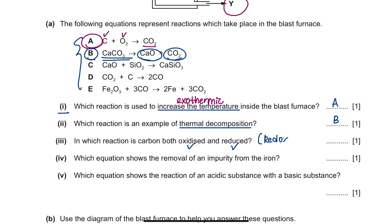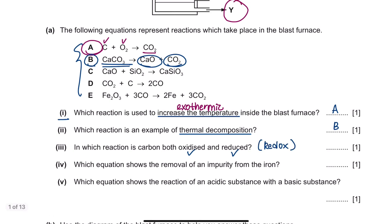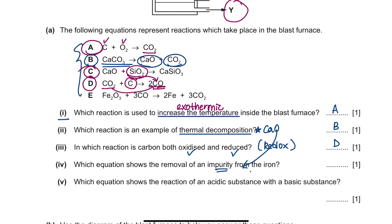Part 3 asks in which reaction carbon is both oxidized and reduced — a redox reaction, where both oxidation and reduction take place simultaneously. In reaction D, carbon dioxide undergoes reduction as it loses oxygen, and carbon undergoes oxidation as it gains oxygen, making it a redox reaction. Part 4 asks which equation shows the removal of an impurity from iron. Calcium oxide removes the impurity silicon oxide, so reaction C is the answer.